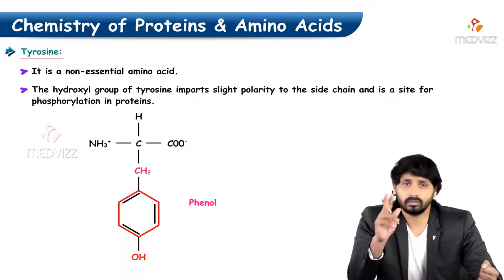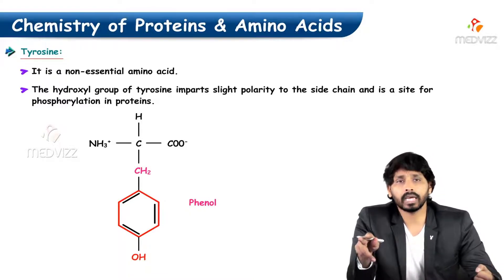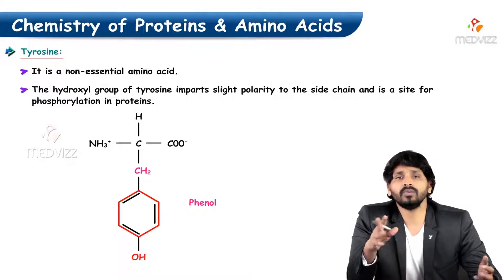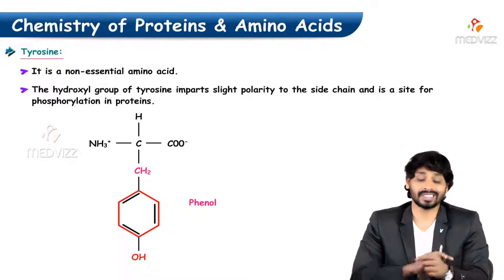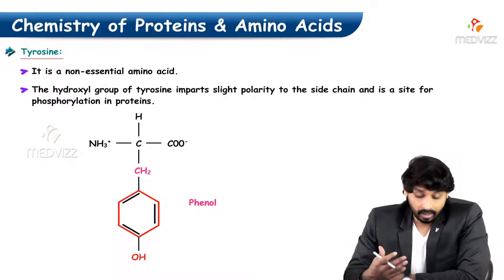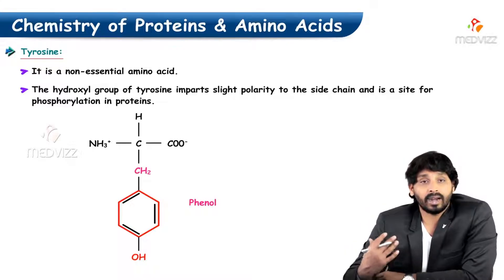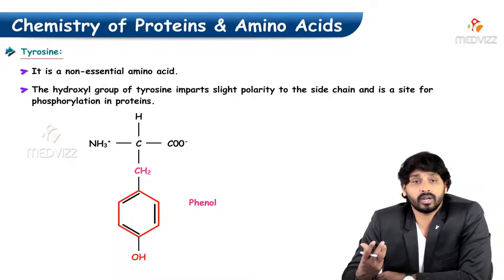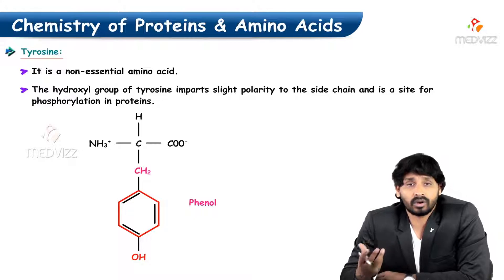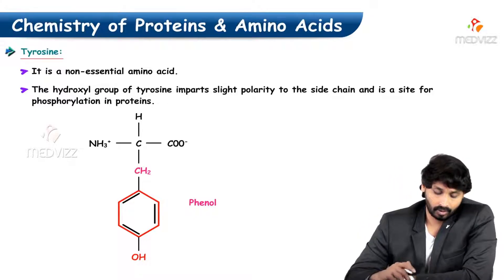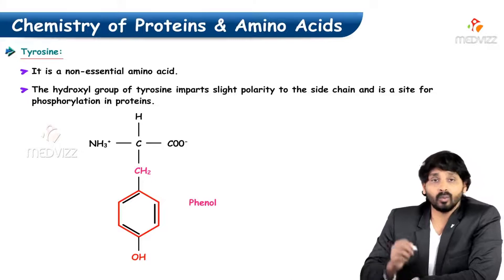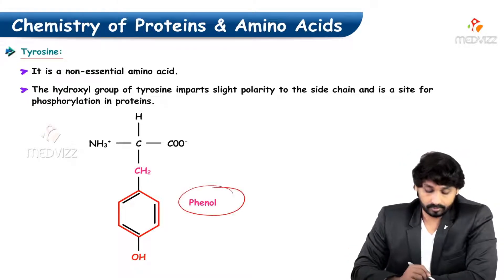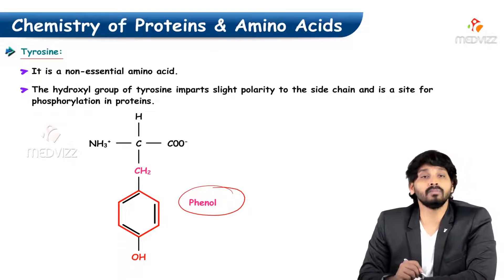Tyrosine is non-essential because if your food contains phenylalanine, tyrosine is automatically synthesized from it. The key structural difference is that tyrosine carries an extra hydroxyl group compared to phenylalanine, which imparts slight polarity. This hydroxyl group is also a site for phosphorylation in proteins. The benzene ring with a hydroxyl group is called phenol, so tyrosine's functional group is phenol.